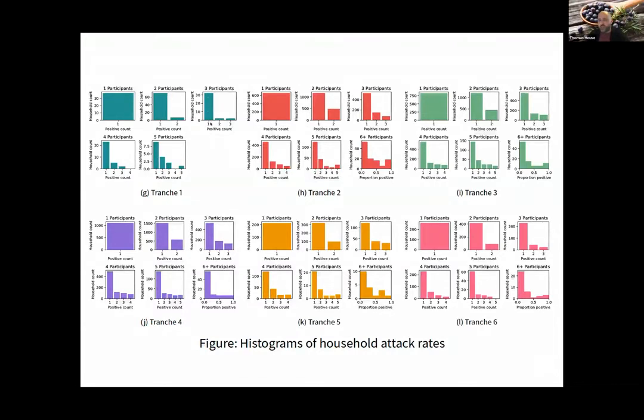There are many more households with two positives than you'd expect from squaring the probability of having one, and many more with three than cubing the probability of one. In some cases you see this U-shape where probability of five is bigger than four. That's a signal of transmission going back to Ball, Mollison, and Scalia-Tomba's work in the late 90s.